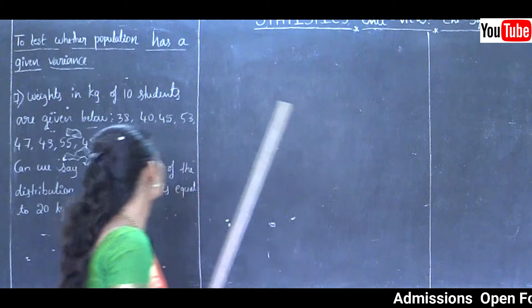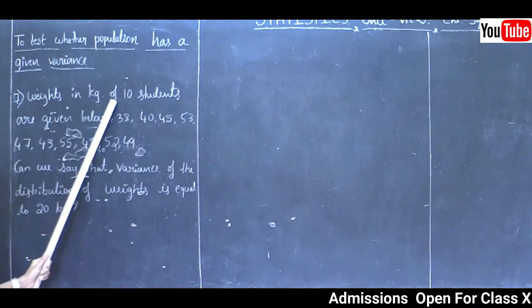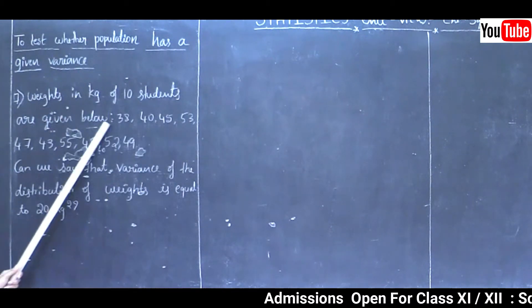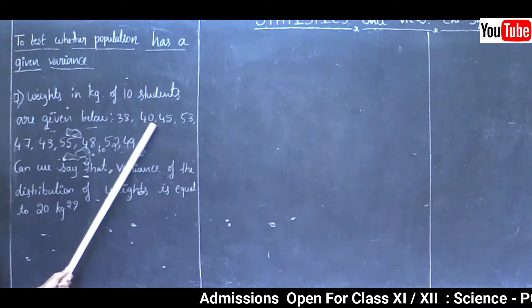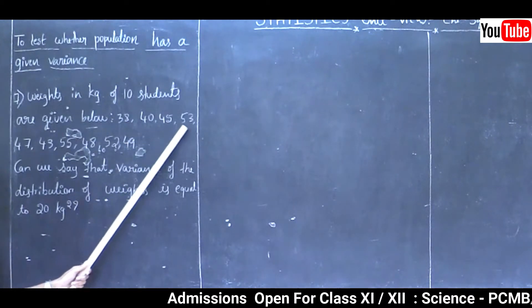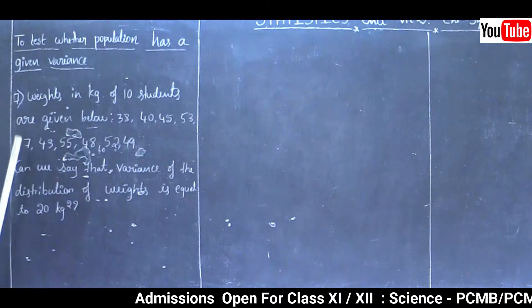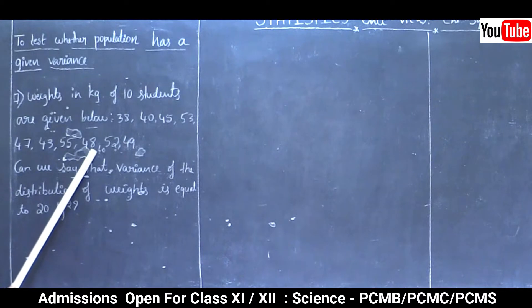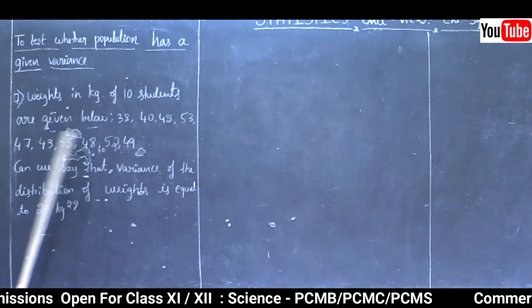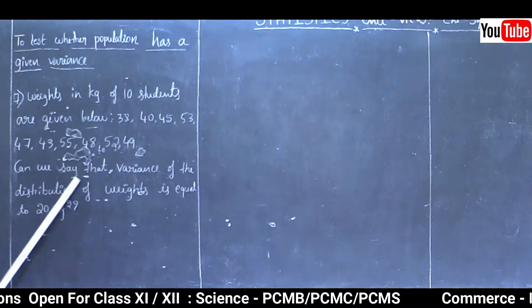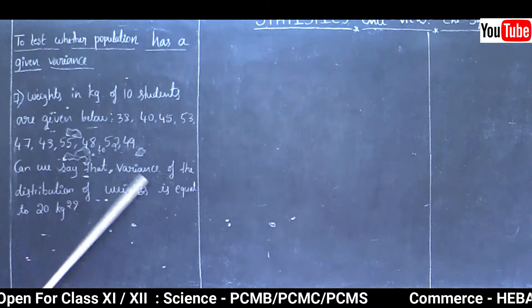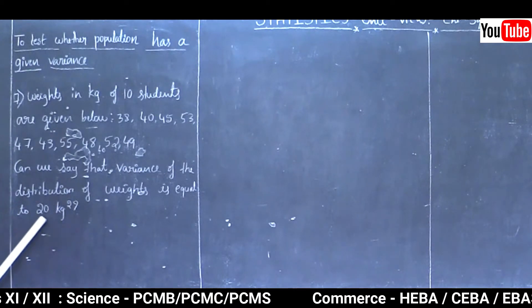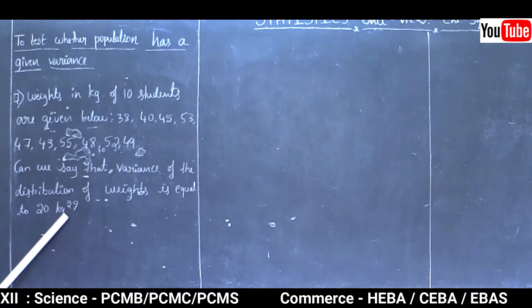Weights in kg of 10 students are given below: 38, 40, 45, 53, 47, 43, 55, 48, 52, and 49. Can we say that variance of the distribution of weights is equal to 20 kg square?